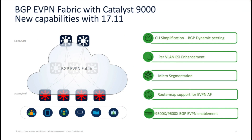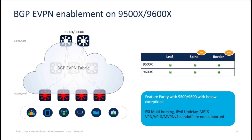Continuing our discussion of fabric innovations, these are some new capabilities introduced in BGP eVPN fabric. ProVLAN ESI enhancement allows VLAN-based single-active load balancing on the CE device. SGT-based microsegmentation, in addition to private VLAN-based microsegmentation, is now supported in BGP eVPN fabric. The Silicon One-based platforms 9500X and 9600X now support BGP spine, leaf, and border roles in the eVPN fabric.